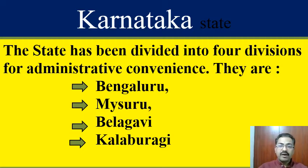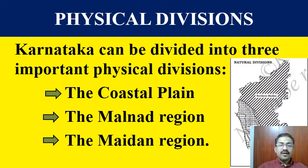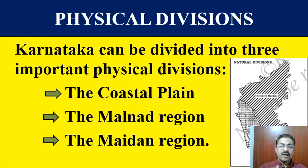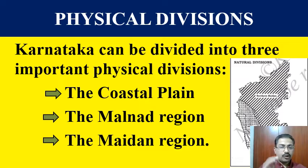Karnataka state has been divided into four divisions for administrative convenience: Bengaluru, Mysuru, Belagavi, and Kalburgi are the four administrative divisions of Karnataka. To understand the physical divisions, we can study Karnataka in three different parts - the coastal plain of Karnataka, the Malanadu region, and the Maidan region. In the Maidan region, there are two different parts: the northern Maidan region and the southern Maidan region. There are three major physical divisions of Karnataka.